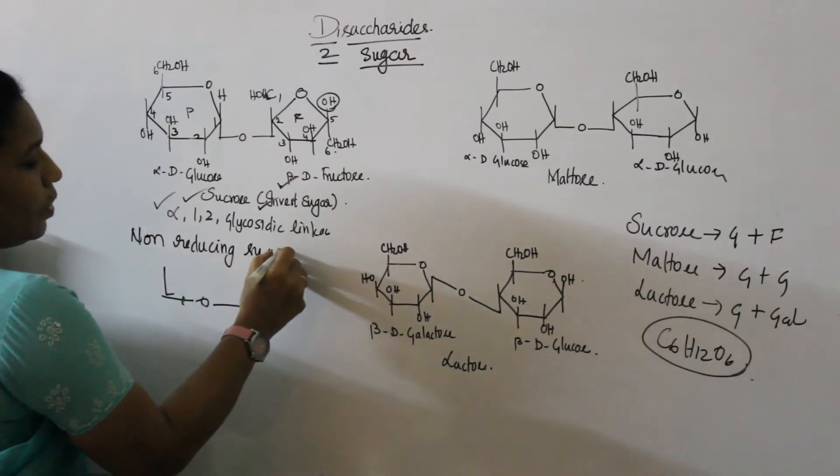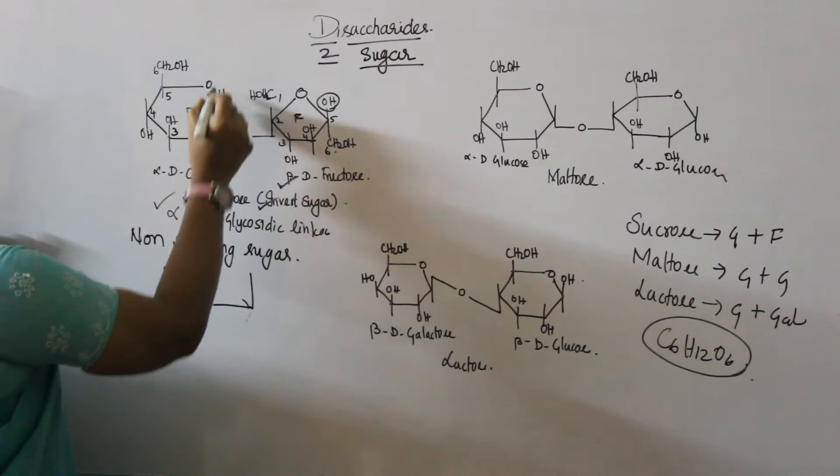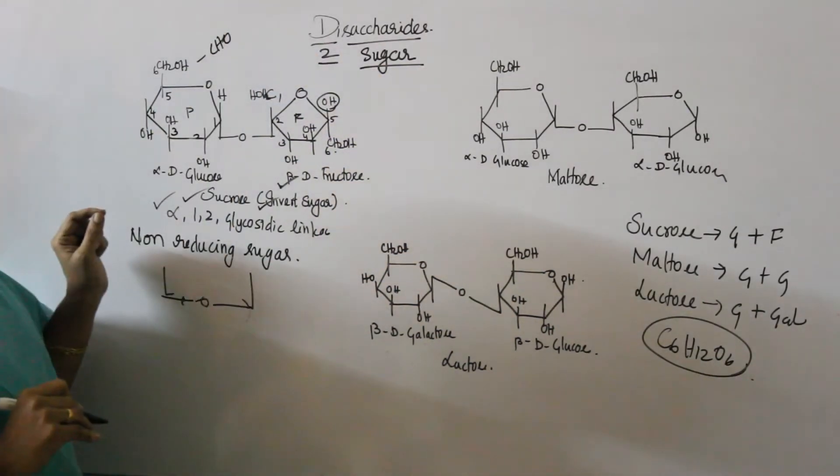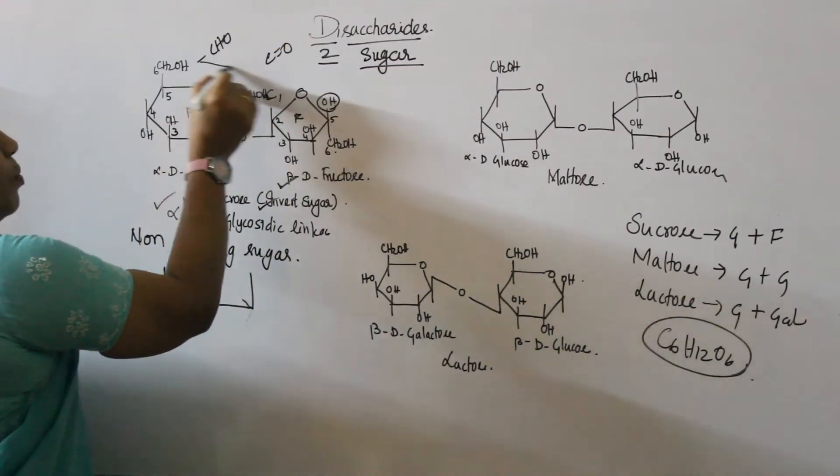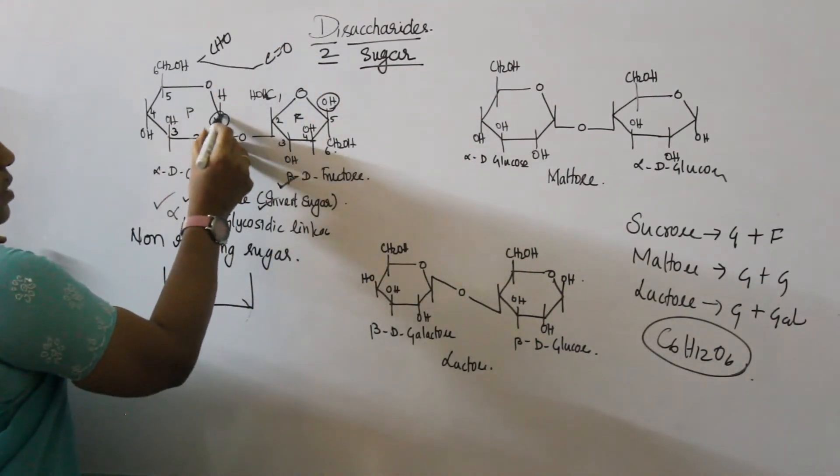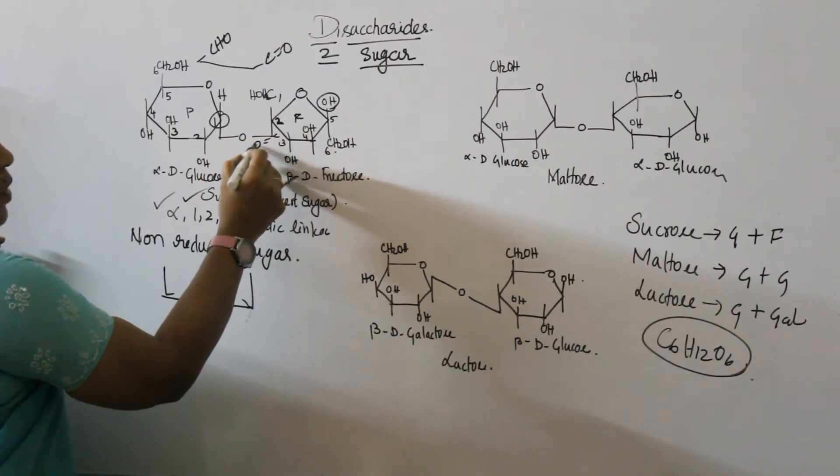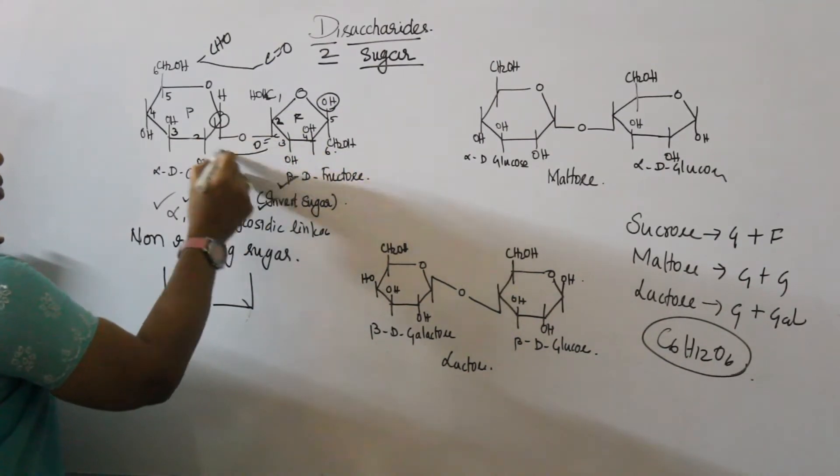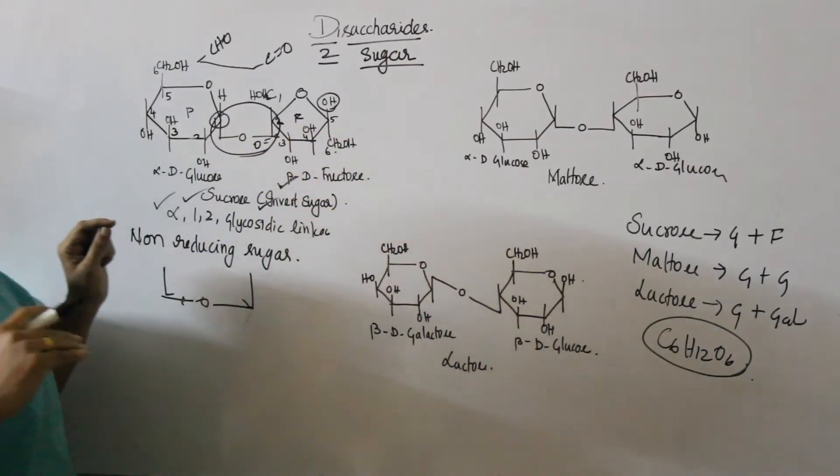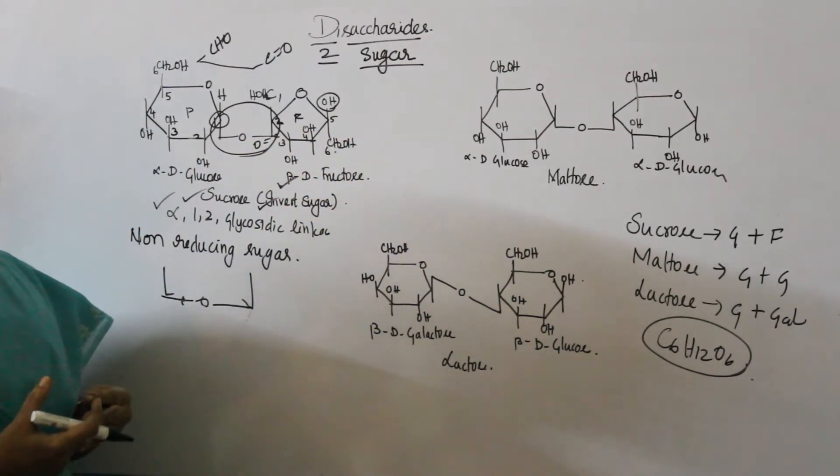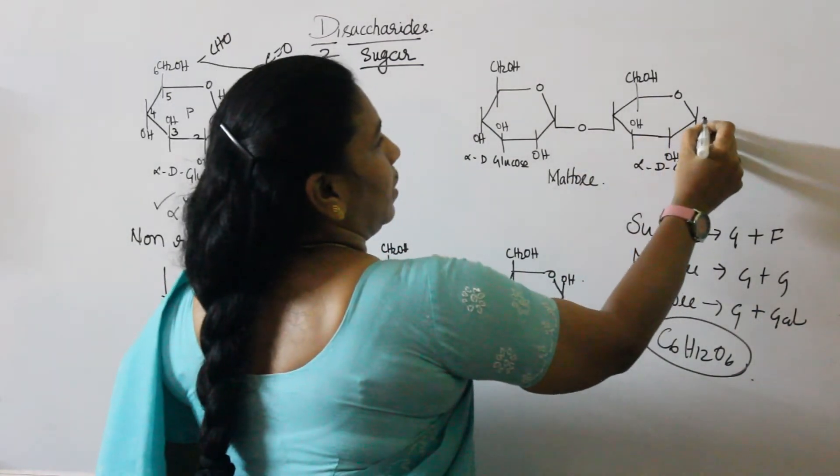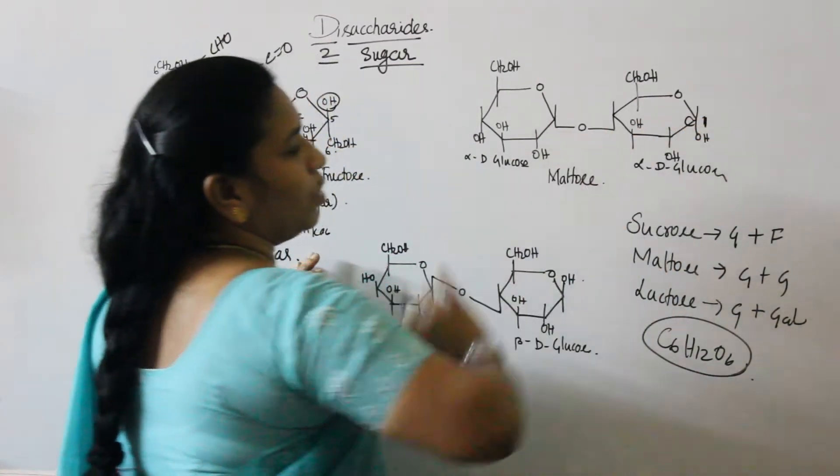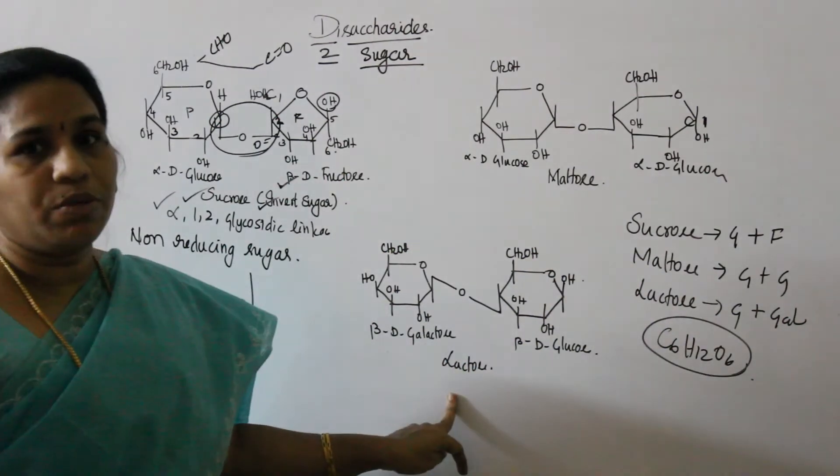Why is it a non-reducing sugar? You can see that glucose has an aldehyde group as the functional group. Fructose has a keto group as the functional group. In these two groups, you can see the first carbon CHO and the second one C=O. The CHO and C=O bond together. Since they are not free, it is a non-reducing sugar.